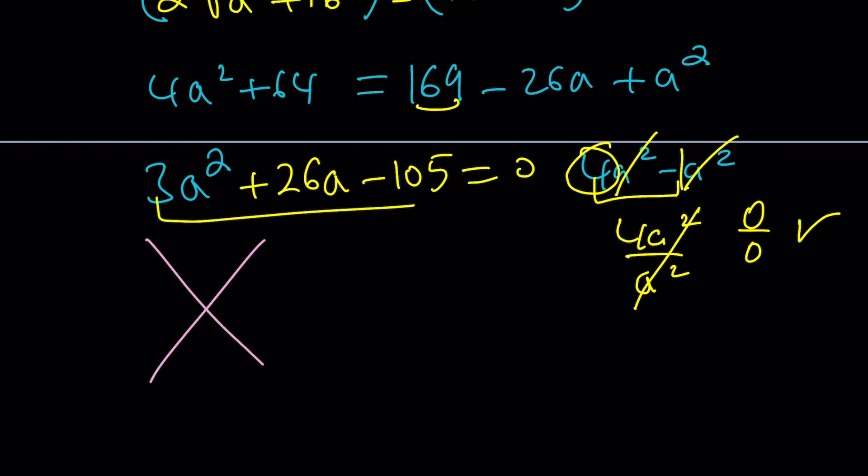First I'm going to multiply these two numbers. That's going to give me negative 315. And this number I'm going to put that here. And then here I'm going to write two numbers. Basically I'm looking for two numbers whose product is negative 315 and whose sum is 26. And those numbers are negative 9 and 35.